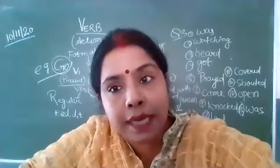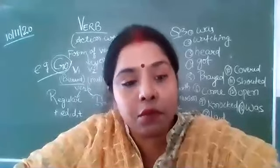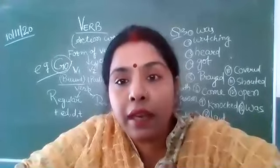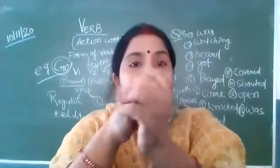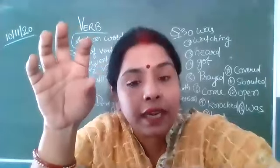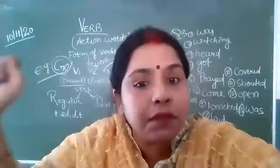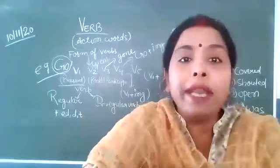V3 hum participle form ko bolte hai. For example, 'go' — go ke saath ki V1 form 'go' hai. We use V1 form in 'we wanna go,' and we write V2 form as 'went' — when we are writing the past form of the verb.